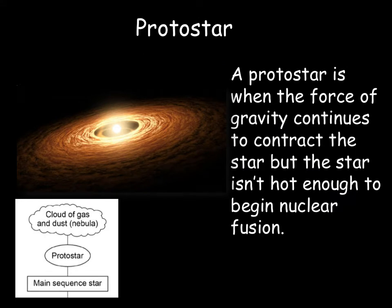A protostar is when the forces of gravity continue to contract the star, but the star isn't hot enough for nuclear fusion to begin. We can see here an image of a protostar. It will begin to get hot, its pressure will increase, its temperature will increase until the point where nuclear fusion begins. As soon as nuclear fusion begins we call that a main sequence star.